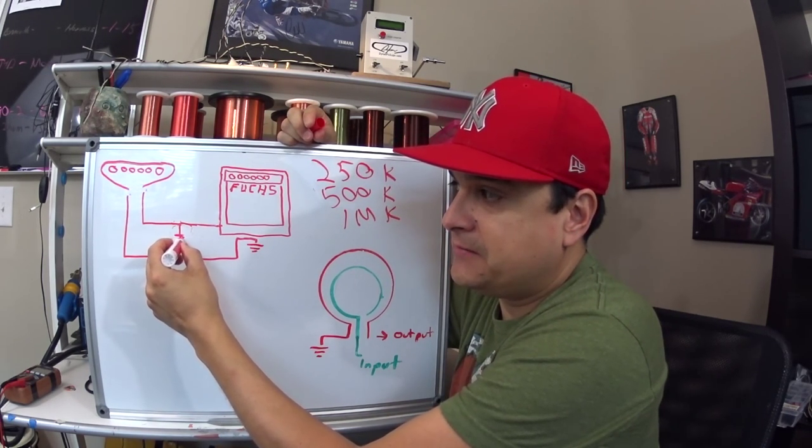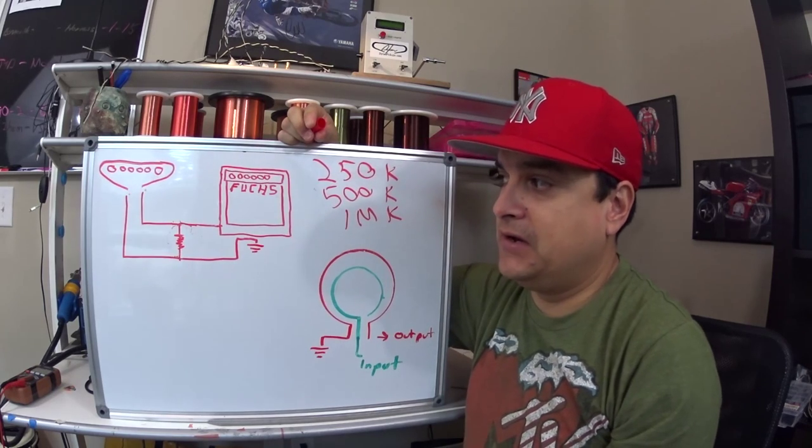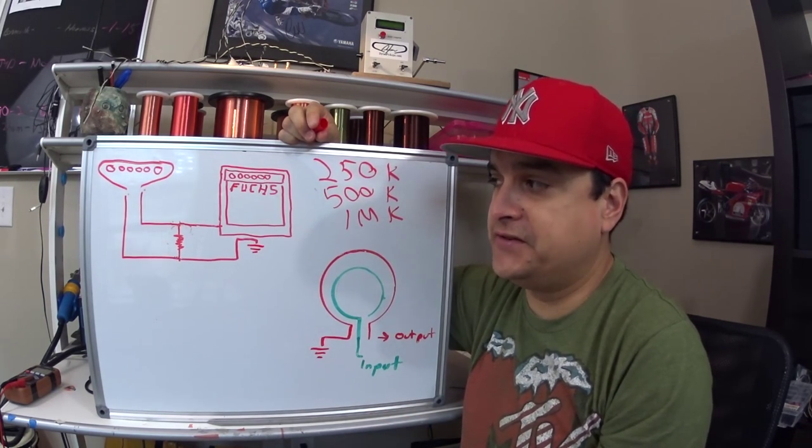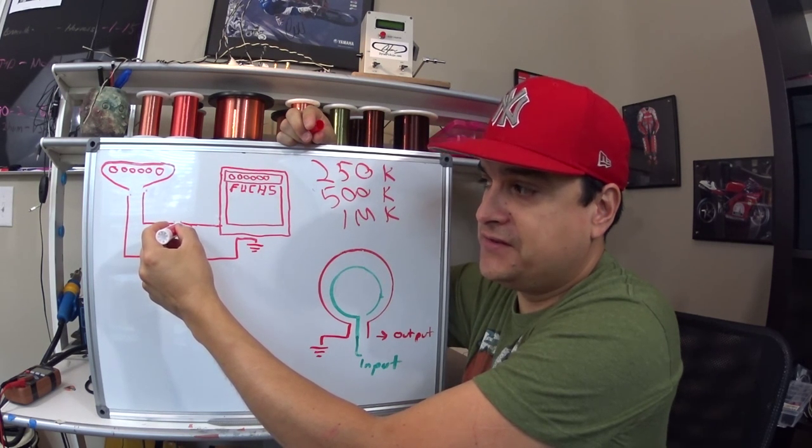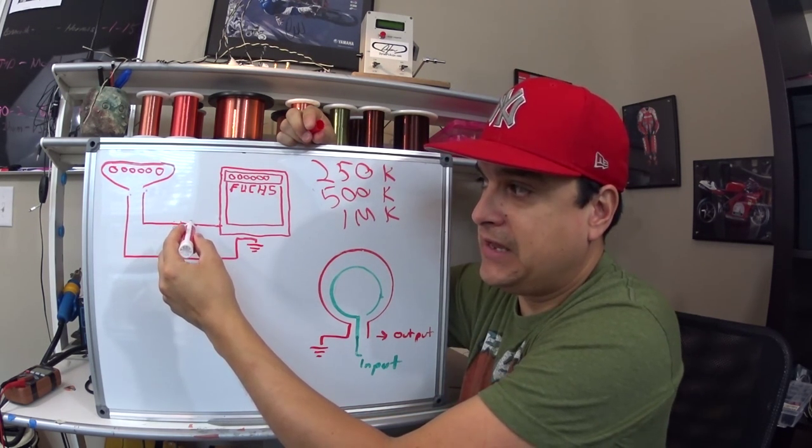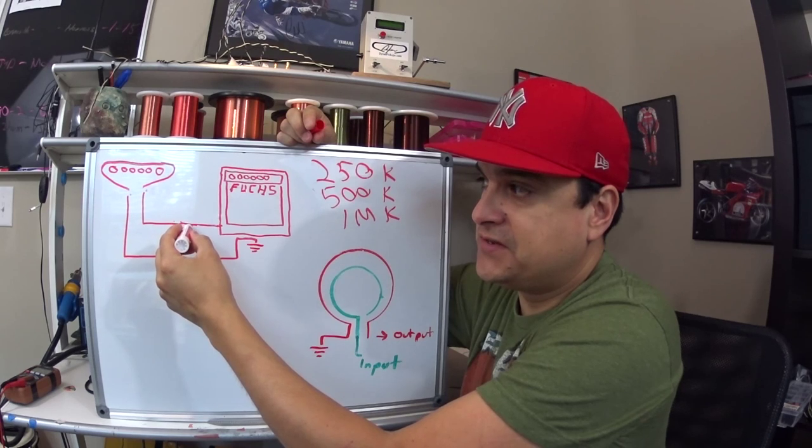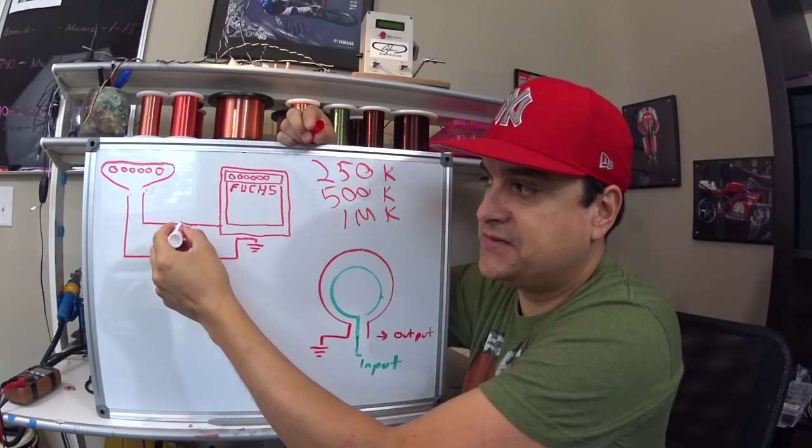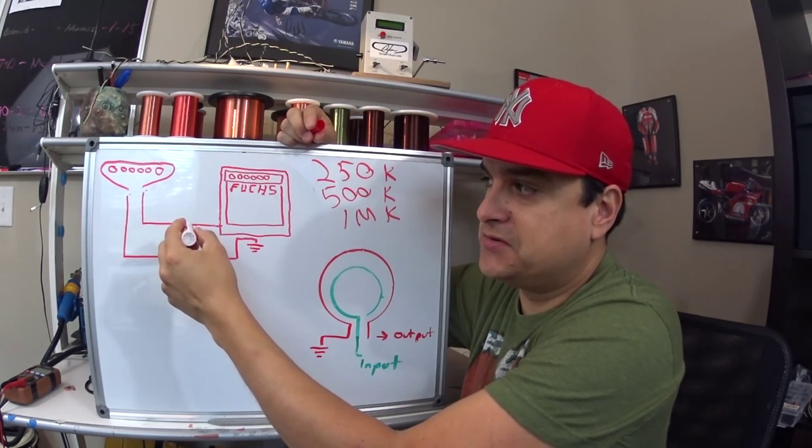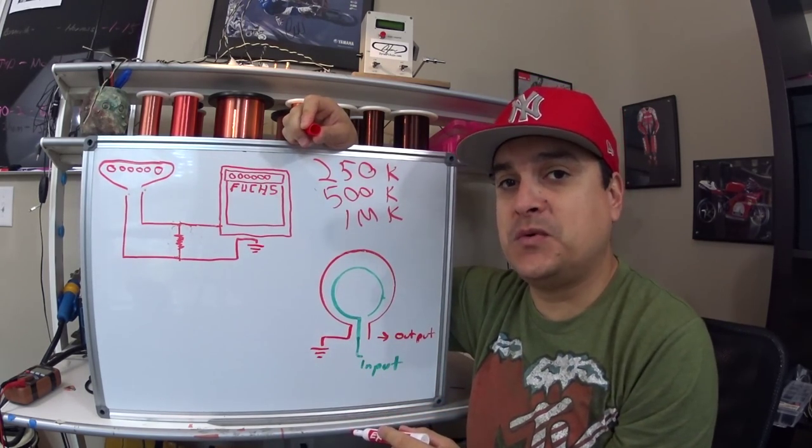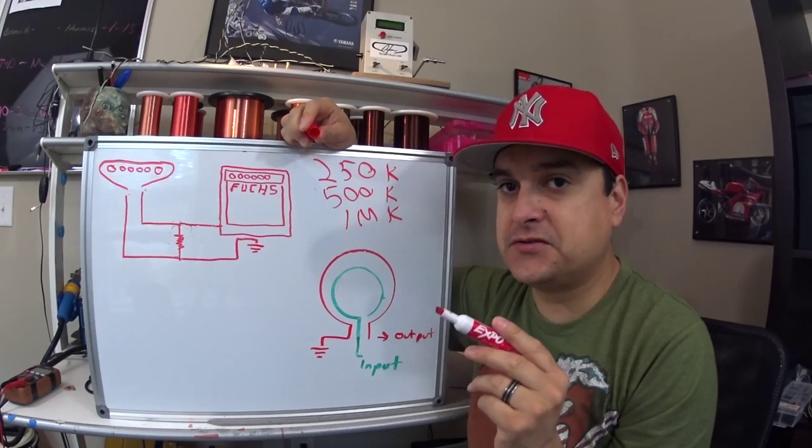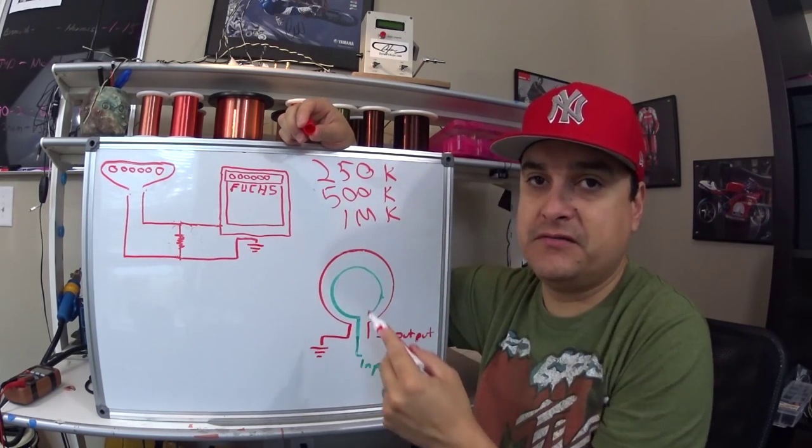If we put a resistor in here that was, let's say 250k or 500k, then some of the signal would go to ground and some of it would pass through because it's not a direct short. So some of it would go and some of it wouldn't. What frequencies are the first ones to go? This is an interesting thing and what plays into all of this.